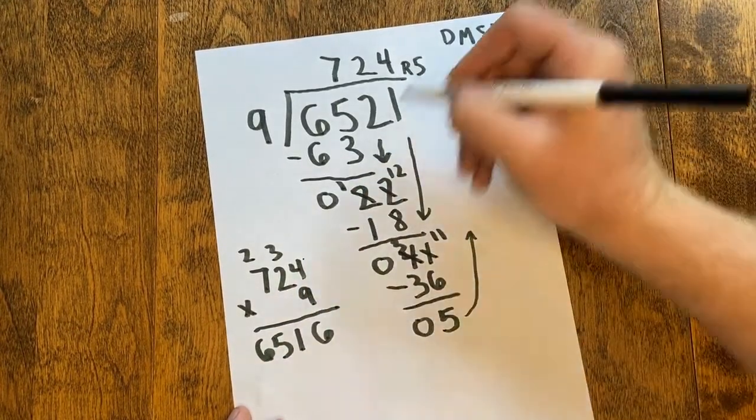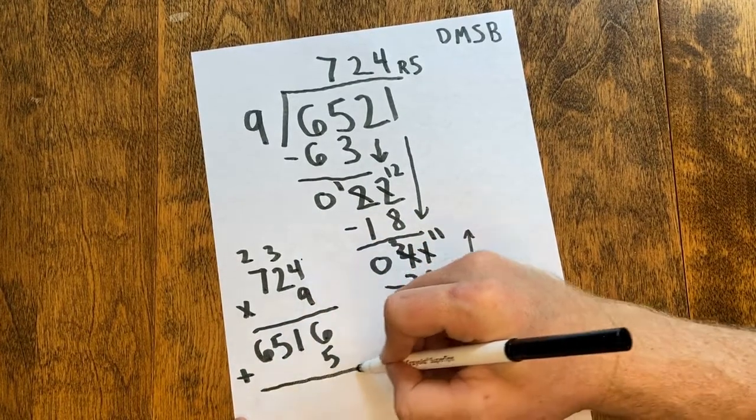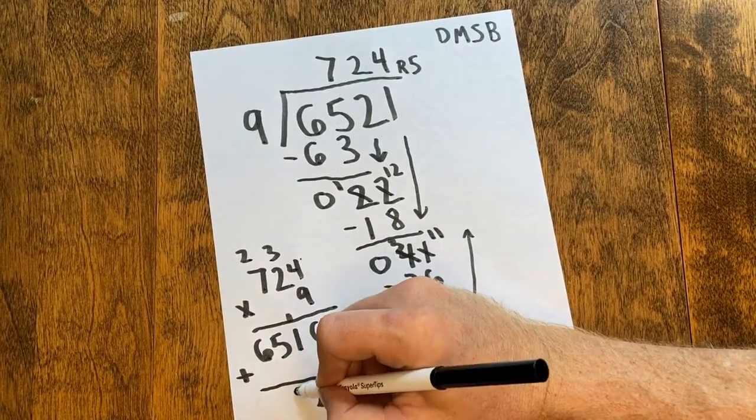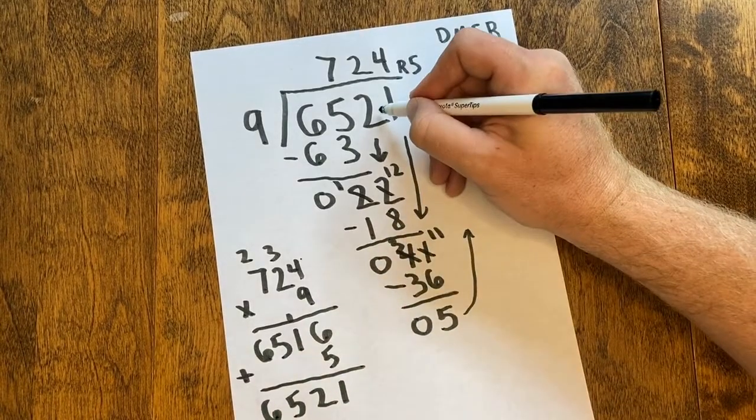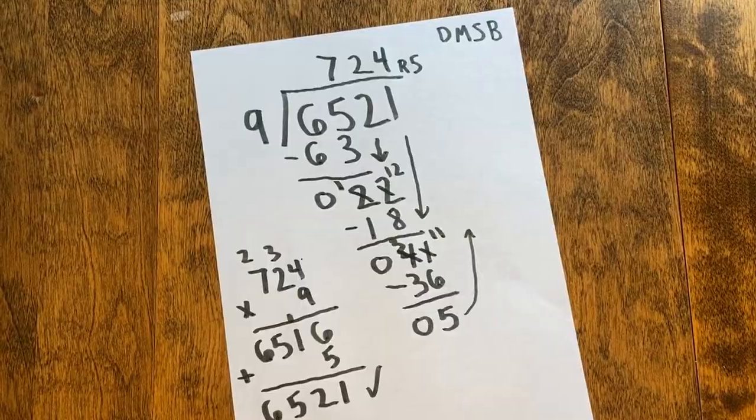Next, I need to add my remainder. So I add 5, and I end up with 6521. So my answer checks out. Good luck, everyone!